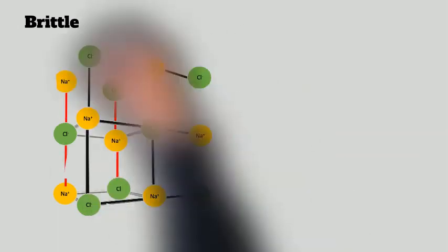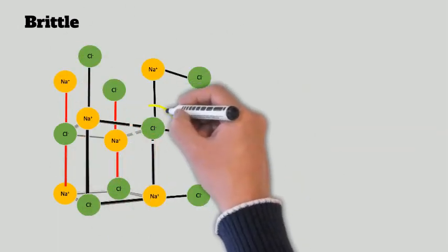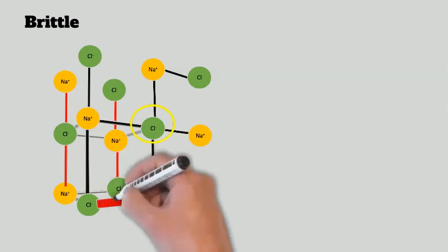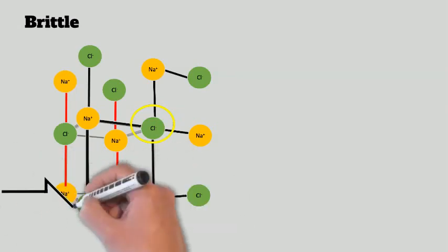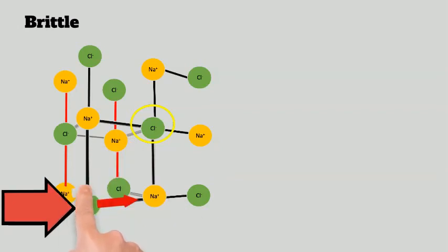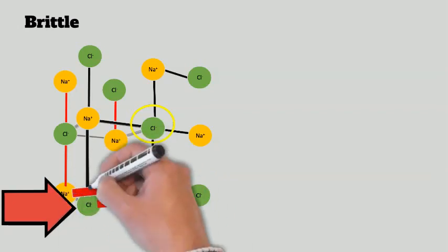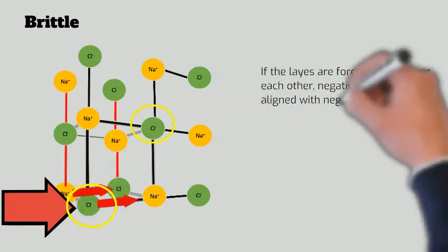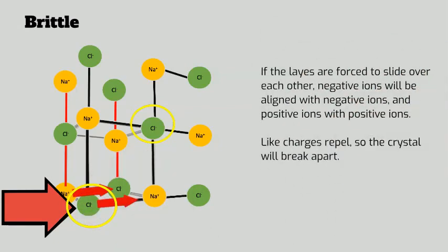Now, ionic substances are also brittle. Now, brittle is just the opposite of malleable. Rather than when we try and bend them, they will bend. Malleable is they're going to bend. If we try and bend a sodium chloride crystal, it's just going to snap. And you can see, hopefully, why that's the case. If I try and push one layer against the other one, I'm going to push two negative ions against each other and two positive ions against each other. And they're not going to like that and that's why the crystal will crack.